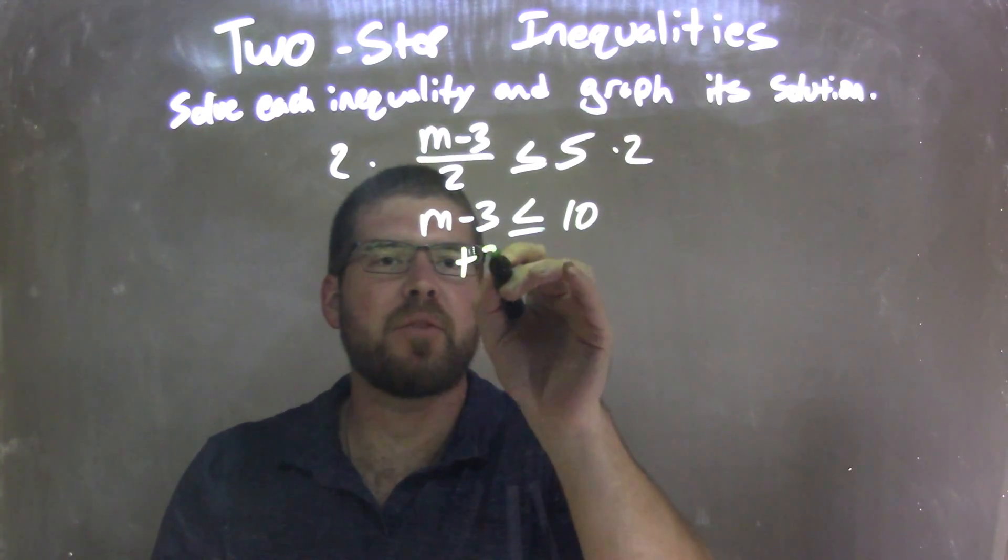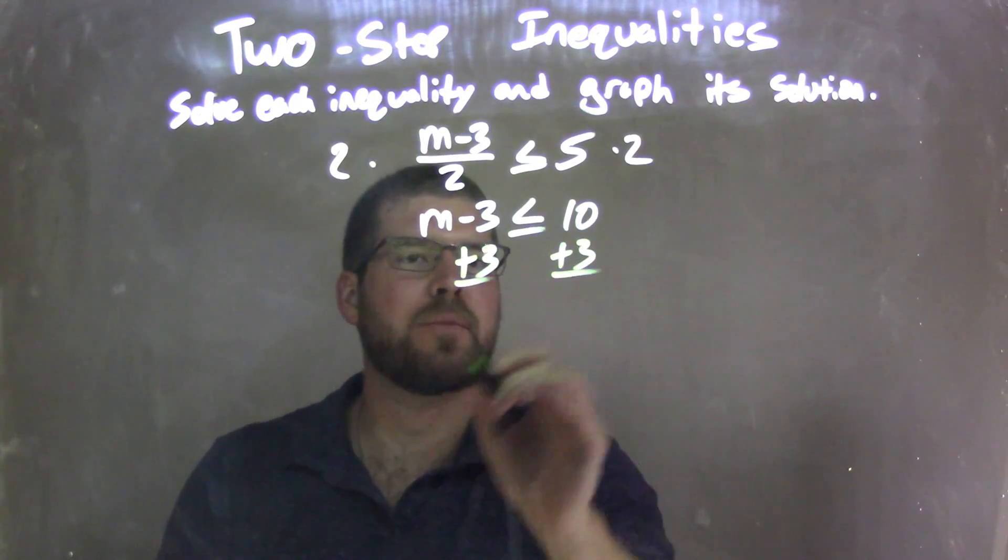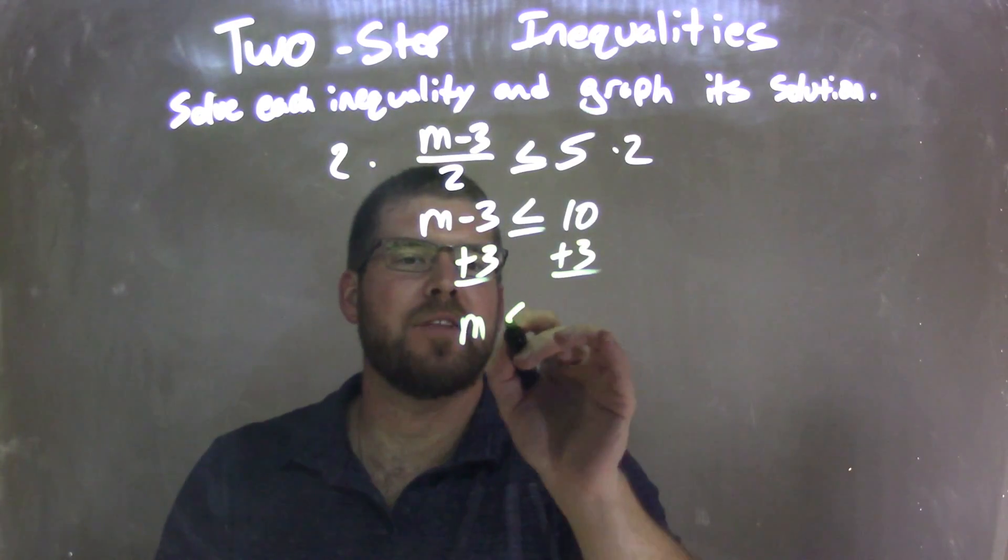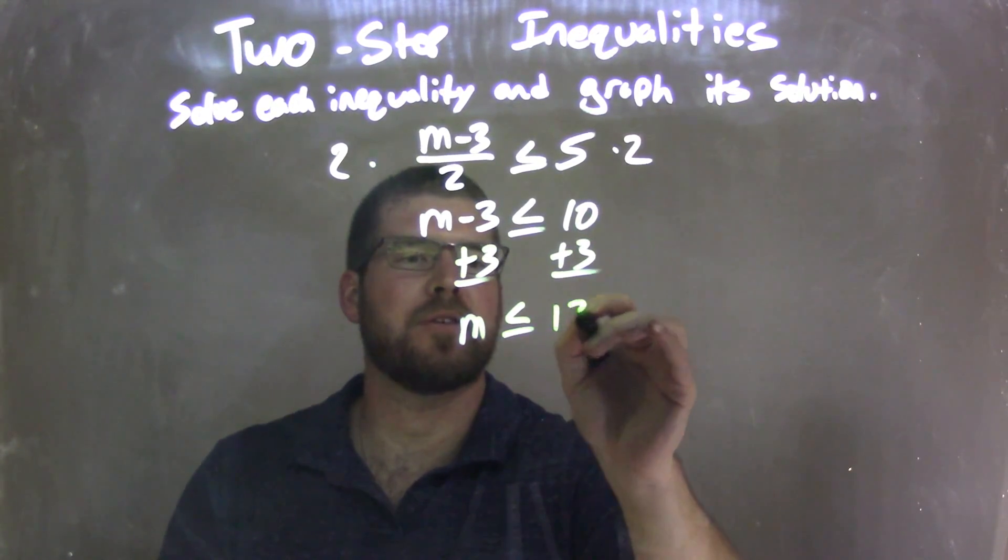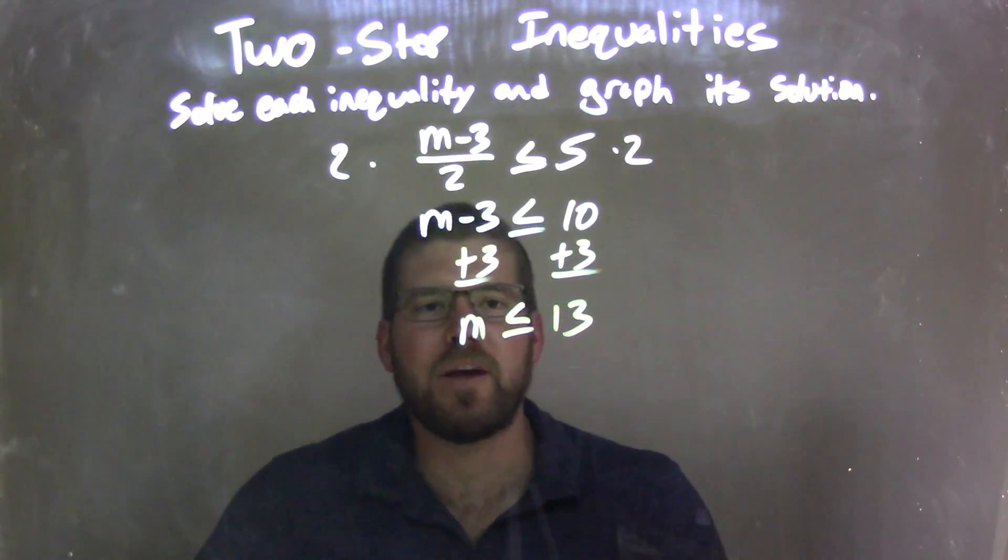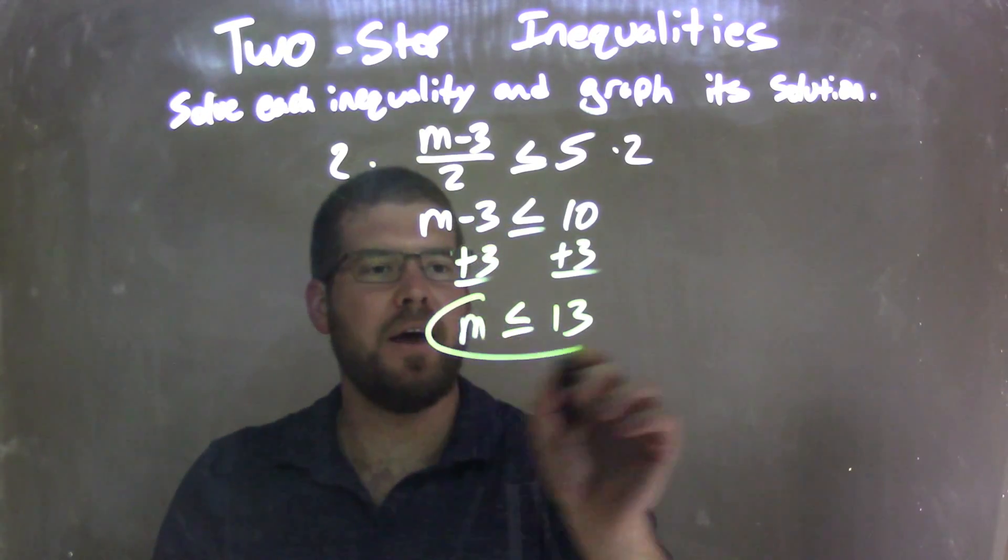I then need to add a 3 to both sides, opposite of that subtraction, giving me an m by itself on the left is less than or equal to 10 plus 3, which is 13 on the right. And there we have it. We have m is less than or equal to 13 as our final answer.